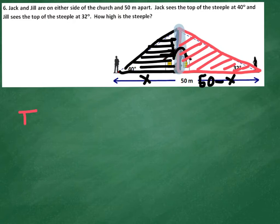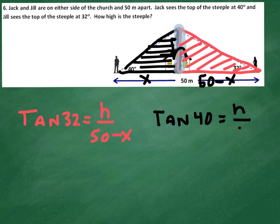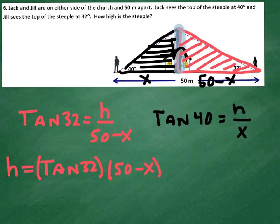I'll just set this up a little bit. Tangent of 32 is h over (50 minus x), and tangent of 40 is h over x. Cross-multiplying these two items gives h equals tangent of 32 times (50 minus x), and over here h equals tangent of 40 times x.